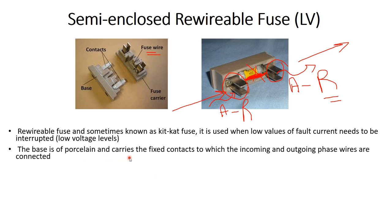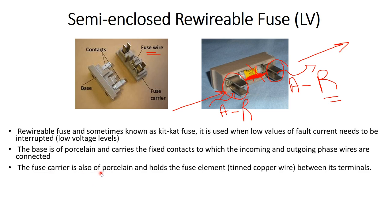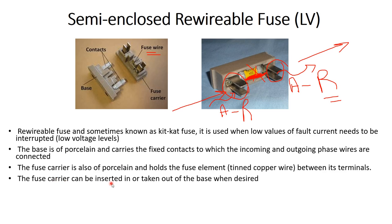The base is made from porcelain and carries the fixed contacts to which the incoming and outgoing phase wires are connected. The fuse carrier is also made of porcelain and holds the fuse element, which is a tinned copper wire between its terminals. The fuse carrier can be inserted into or taken out of the base when desired.